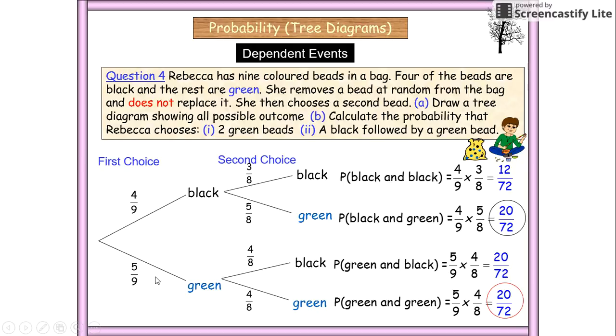So we've got four over nine and four over nine. We then reduce them both by one. So we get three out of eight. And then we've got to do the complement. So we've got to do five over eight. So that equals one.